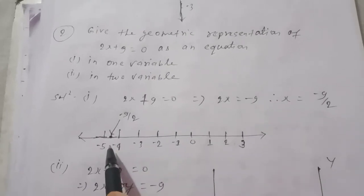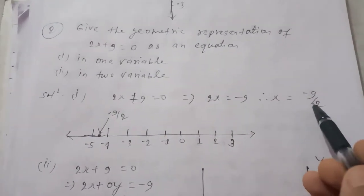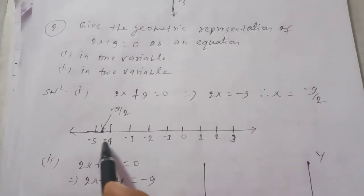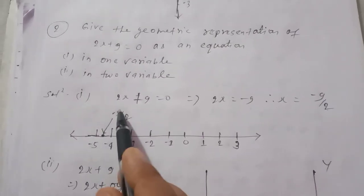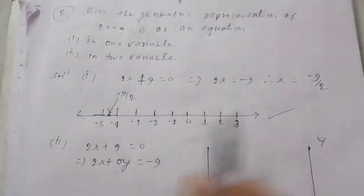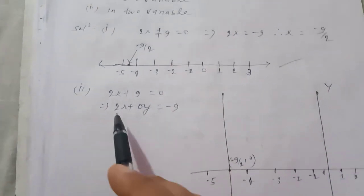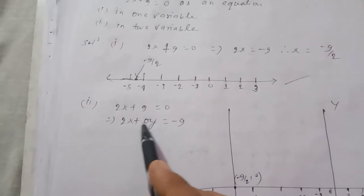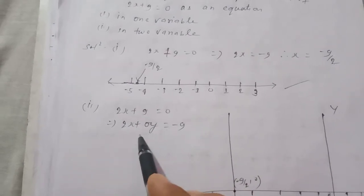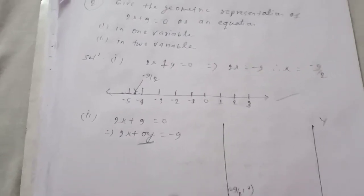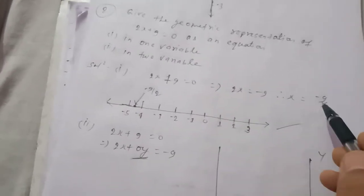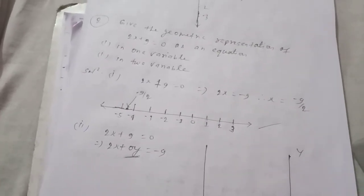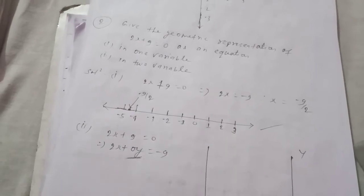Negative minus 9 by 2 is at 4 and a half. So minus 9 by 2 represents x equal to minus nine by two. This is minus nine by two and zero. So the representation shows minus nine by two on the number line.